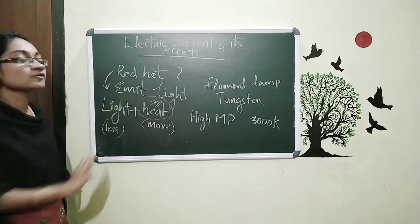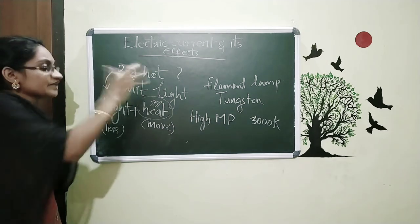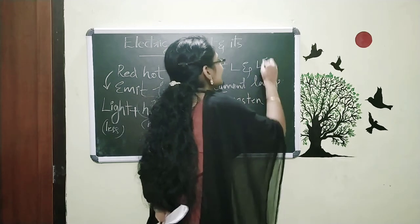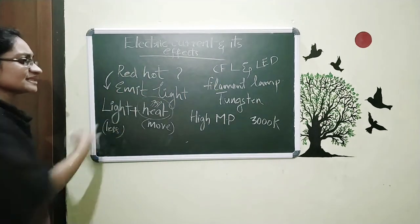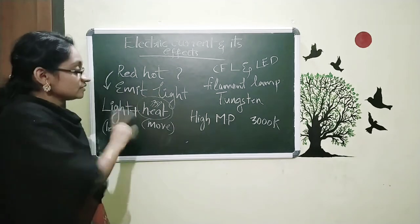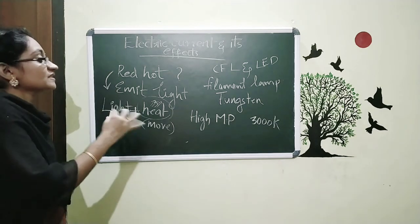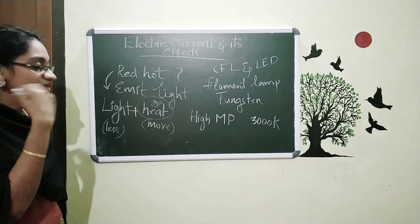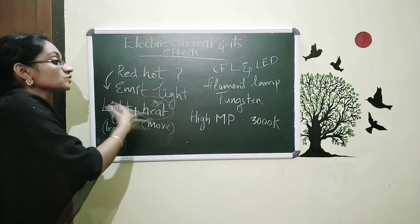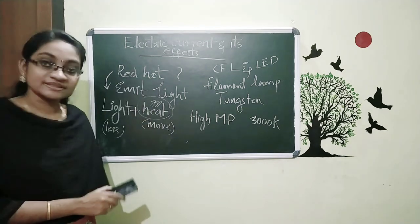Most of the energy is lost to produce heat, so we are now not using filament lamps as widely. We are replacing them with CFL and LED bulbs, because in CFL and LED, most of the energy is not lost as heat. The heating effect is a disadvantage for the filament lamp — we need the light, but heat is produced and most energy is wasted.